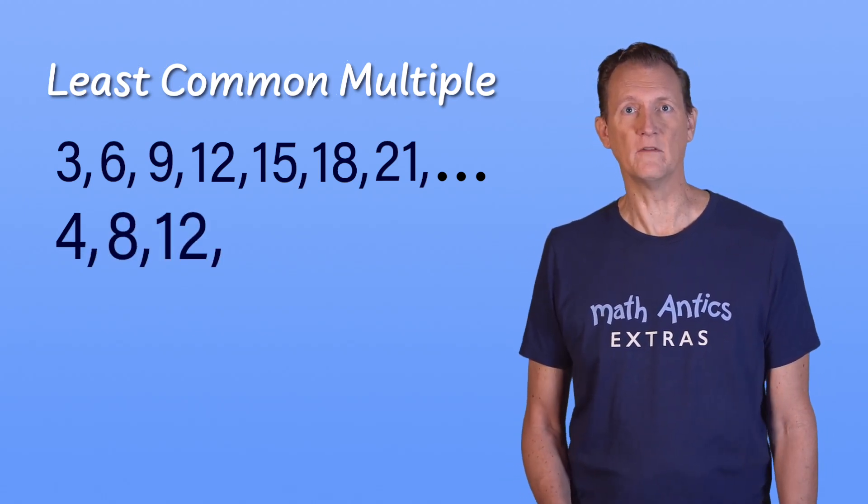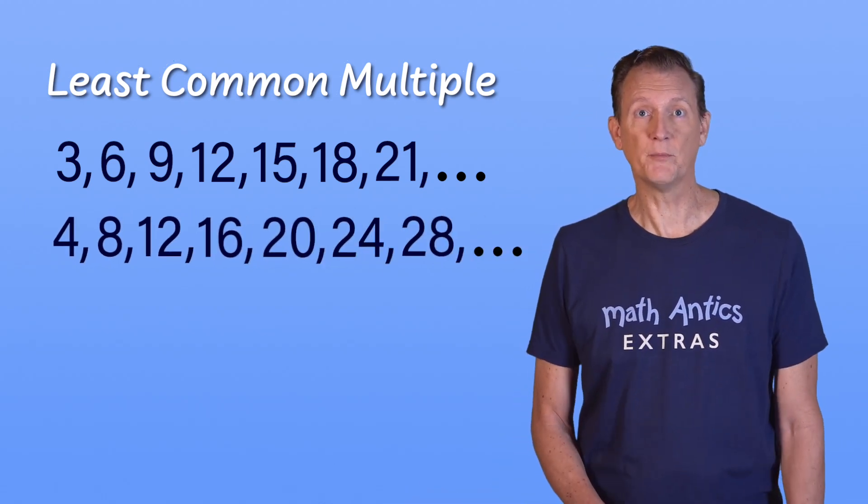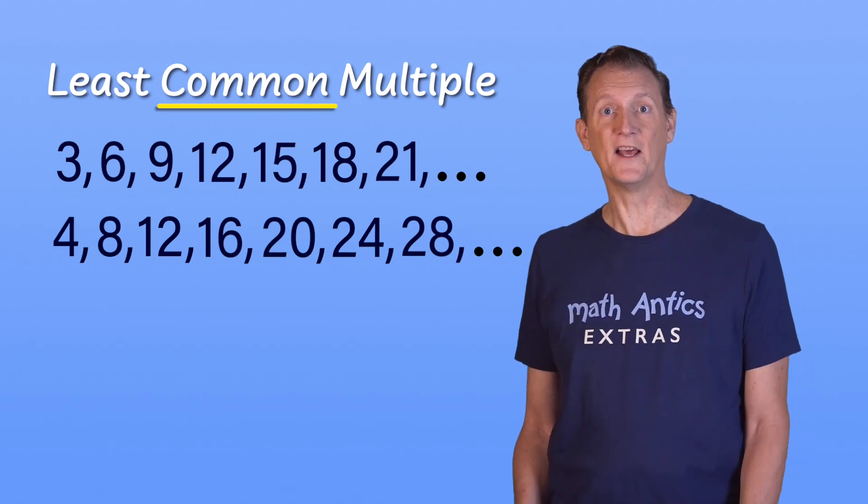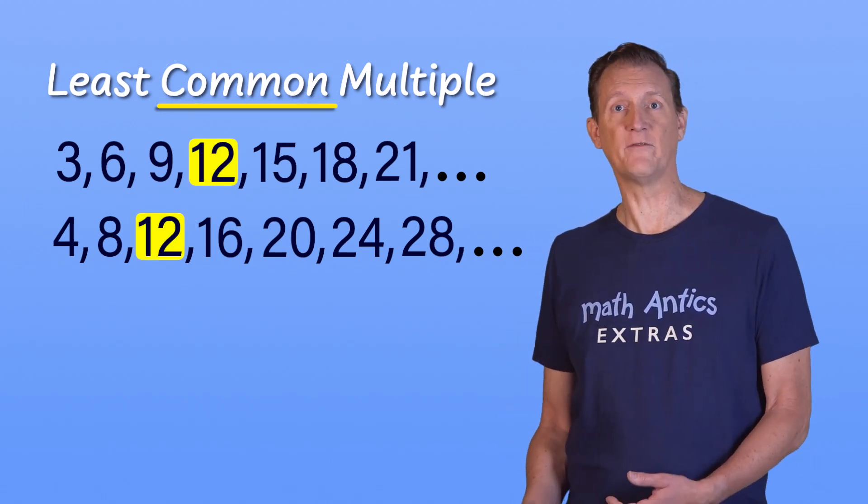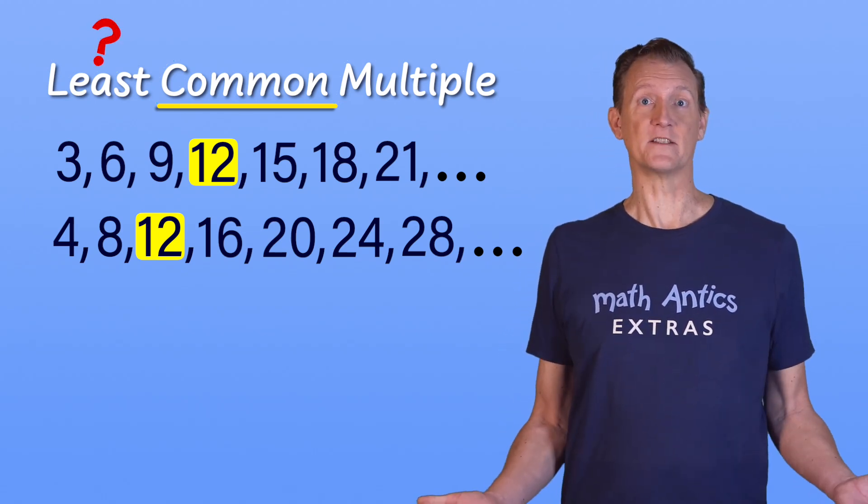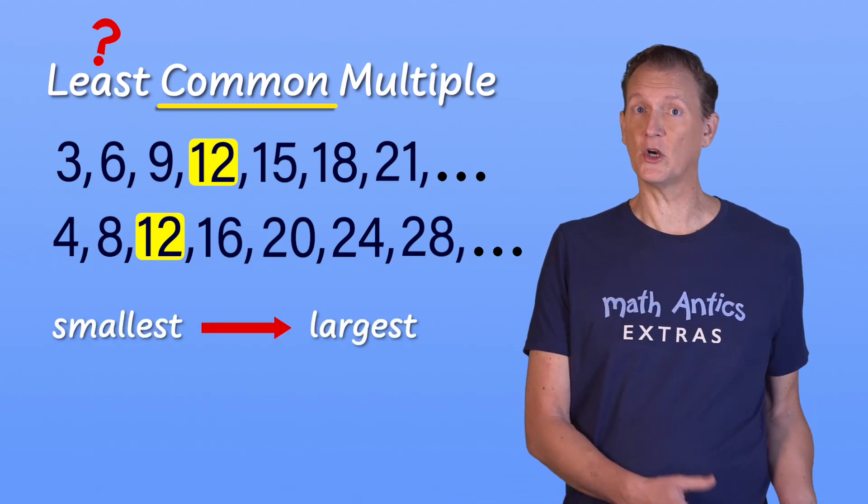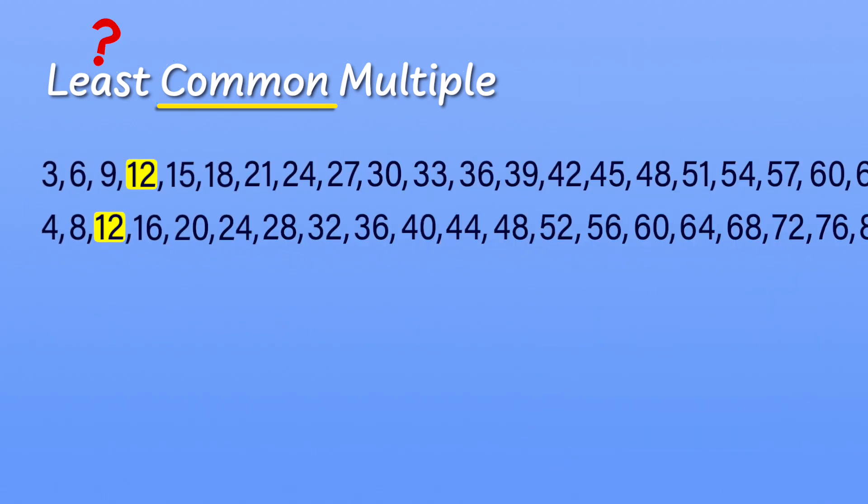4, 8, 12, 16, 20, 24, 28, and so on. Did you notice any multiples that 3 and 4 have in common? Yep, 12 is a multiple of both 3 and 4. But is it their least common multiple? Also yes, because it's the first one that we encountered, and we listed the multiples in order from smallest to largest. If we had kept making larger multiples, we'd see that 3 and 4 do have other common multiples, like 24, 36, 48, 60. But they're all bigger than 12. So 12 is the LCM of 3 and 4.